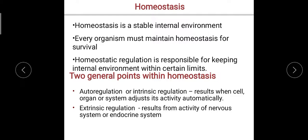Extrinsic regulation results from the activity of the nervous system or the endocrine system. It is something controlled by our nervous system or our endocrine system — not the organ itself. So there is involvement of either the nervous system or the endocrine system.